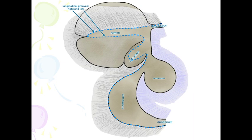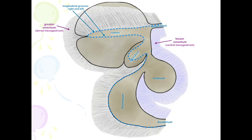We're going to see that the lesser omentum is going to be running along the lesser curvature of the stomach. Then we have the greater omentum running in those right and left longitudinal grooves and then coursing along the greater curvature of the abomasum.